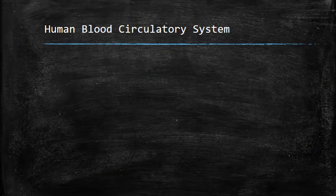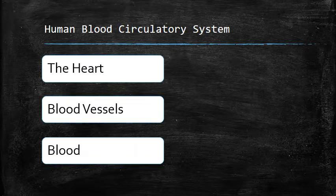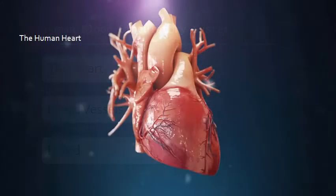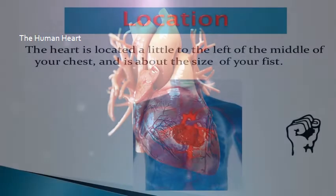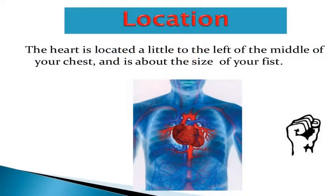The human blood circulatory system consists of heart, blood vessels, and blood. In this lecture we will discuss about the structure of the heart. Our heart is a pumping organ — it pumps blood through blood vessels. The heart is located a little to the left of the middle of your chest and is about the size of your fist.